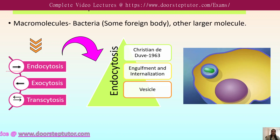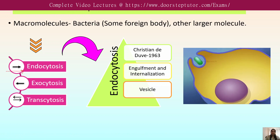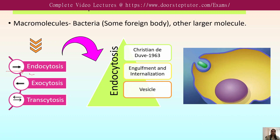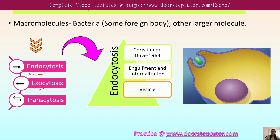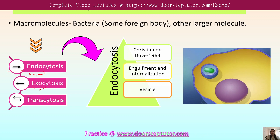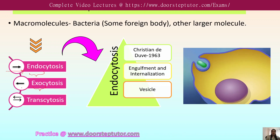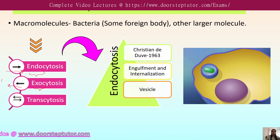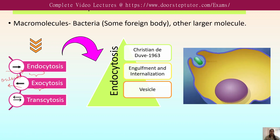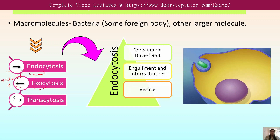When something is coming inside the cell, or when molecules are transported from outside to inside the cell, that process is known as endocytosis. Exocytosis means the transportation of molecules from inside the cell to outside the cell, as the arrow indicates toward the outside. This process is known as the exocytosis mechanism.